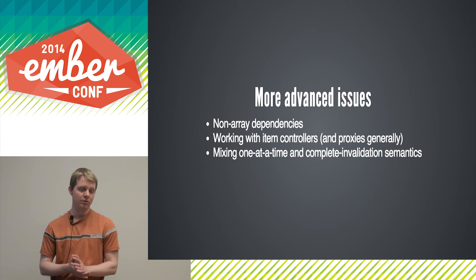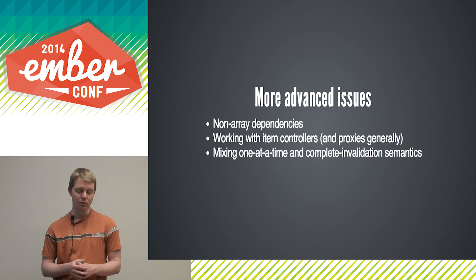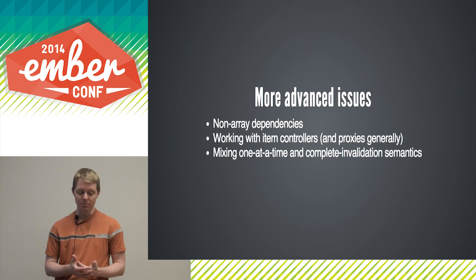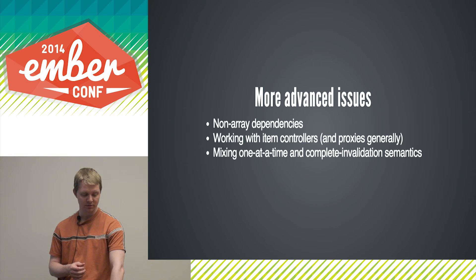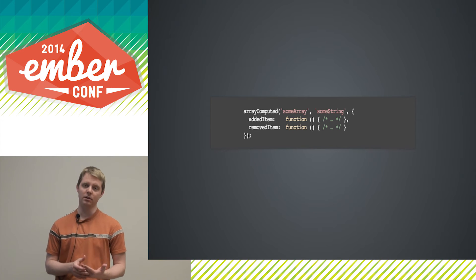That's all you need to know to do simple array computed properties. But as you work with them, you'll run into certain issues. We'll go over some more common ones: what happens with non-array dependencies, working with item controllers, working with proxies generally, and how to mix one-at-a-time with complete invalidation semantics. When a non-array dependency has changed, the array computed property is completely invalidated.